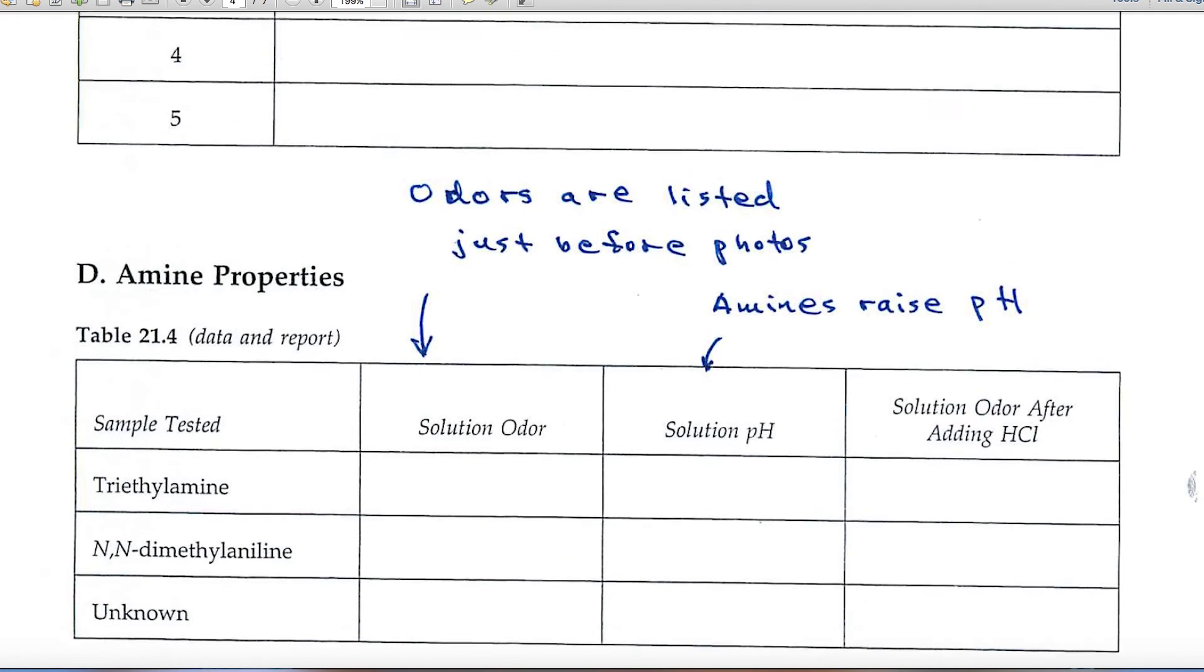Part D deals with amine properties. And it asks for solution odor. Well, that's something you can't do online, and so we've given you the odors. They're listed just before the photos for table 21.4. Solution pH - remember that amines are bases, and so they elevate the pH.